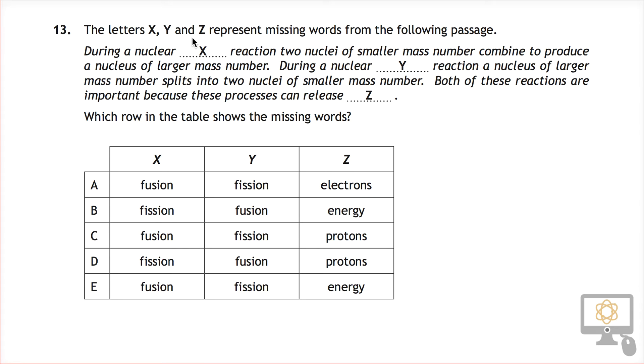It says the letters X, Y and Z represent missing words from the following passage. So we need to determine what the words are. There's lots of words here. Fission and fusion occurs a lot and Z has multiple different options.